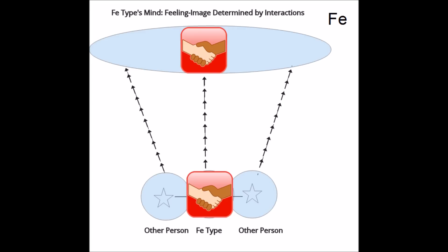With TI types, we see how the impartial principle determines the status of particular individuals. With FE, things are really the other way around. It is the sociality and reactions of particular individuals that determine the overall feeling image in the FE type's mind.